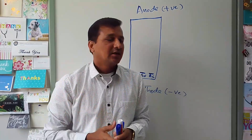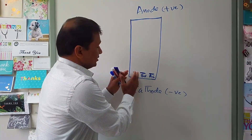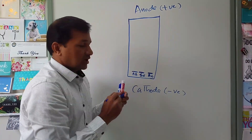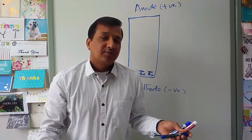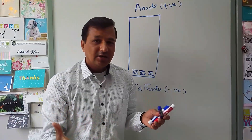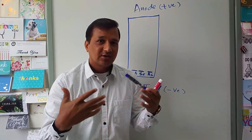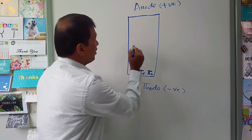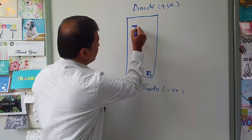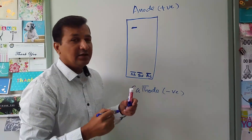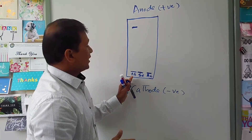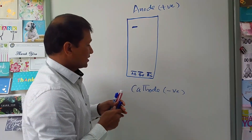Adult hemoglobin has two beta chains, both normal, where glutamate is not replaced by anything. Since glutamate is a negatively charged amino acid, adult hemoglobin carries a negative charge and will move all the way toward the anode — it will be positioned closer to the anode.